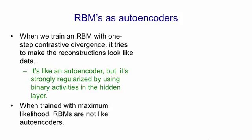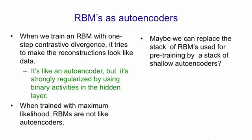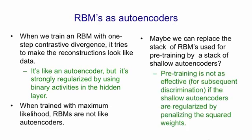If we train restricted Boltzmann machines with maximum likelihood, they're not at all like autoencoders. One way to see that is if you had a pixel that was pure noise: an autoencoder would try to reconstruct whatever noise value it had, but a restricted Boltzmann machine trained with maximum likelihood would completely ignore that pixel and model it just using the bias for that input. So since we can view a restricted Boltzmann machine as a kind of strongly regularised autoencoder, maybe we can replace the RBMs used for pre-training with a stack of autoencoders. It turns out that pre-training is not as effective if you use shallow autoencoders regularised just by penalising the squared weights — stacking these autoencoders doesn't work as well as stacking restricted Boltzmann machines.